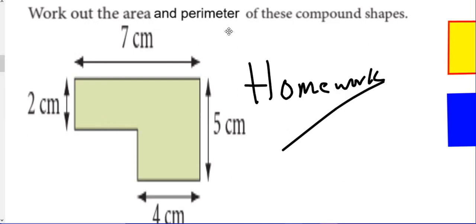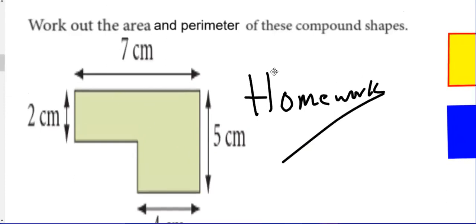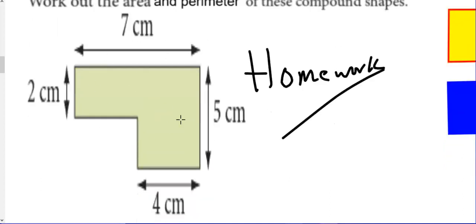Work out the area and perimeter of these compound shapes. You are given a compound shape, and the question says work out the area and perimeter. I'm going to start with area and then later perimeter. To find the area of this shape, you need to divide this compound shape into rectangles.